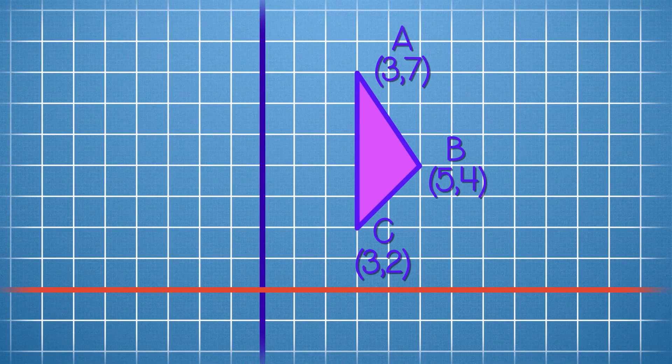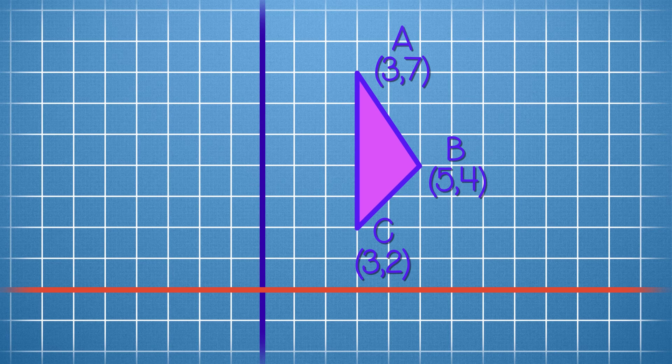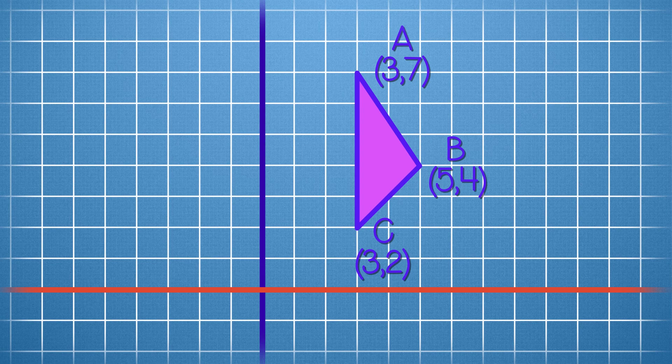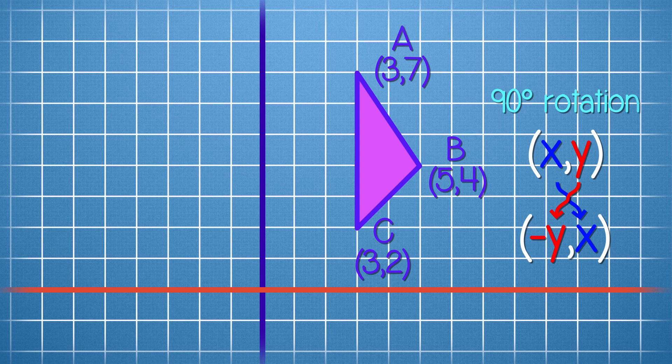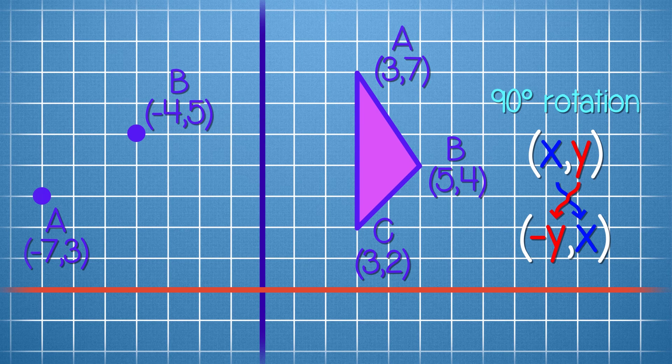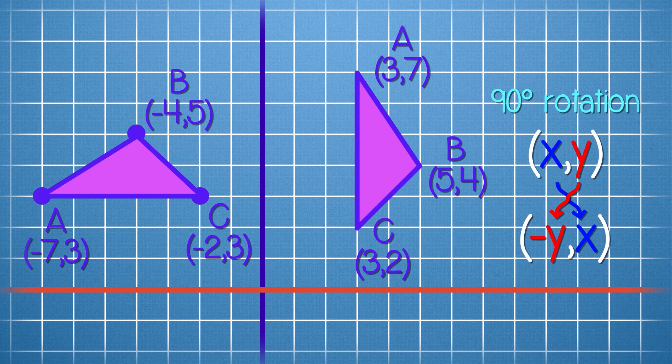Here is our coordinate plane, and here is our shape triangle ABC. Let's say we want to rotate it 90 degrees. Remember what the rule is? When rotating 90 degrees, (x,y) becomes (y,-x). So vertex A becomes (7,-5). Vertex B becomes (4,-5). And vertex C becomes (2,-3). Notice anything?